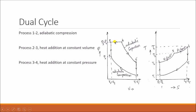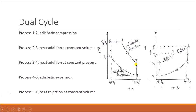Once the heat is added during constant volume and constant pressure, the air has to start expanding. From 4 to 5 is the adiabatic expansion process — the air expands adiabatically, no heat is added or rejected. The pressure reduces to P5 and volume increases to V5. The temperature reduces to T5 and entropy remains constant. Once fully expanded, the heat has to be rejected — process 5 to 1, heat rejection at constant volume. The volume is kept constant during heat removal, the pressure reduces to P1, the temperature reduces from T5 to T1, and entropy reduces from S5 to S1.